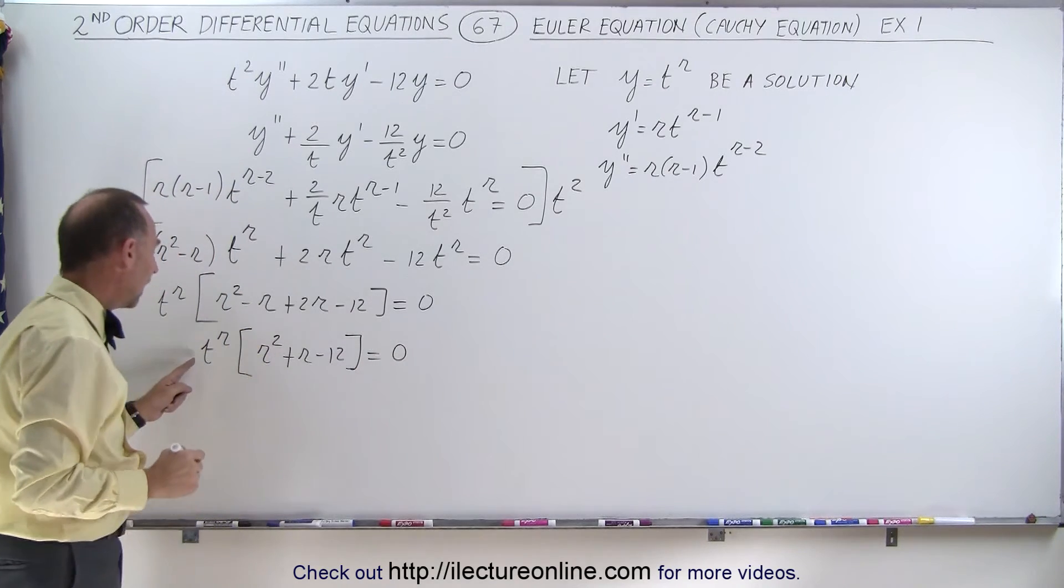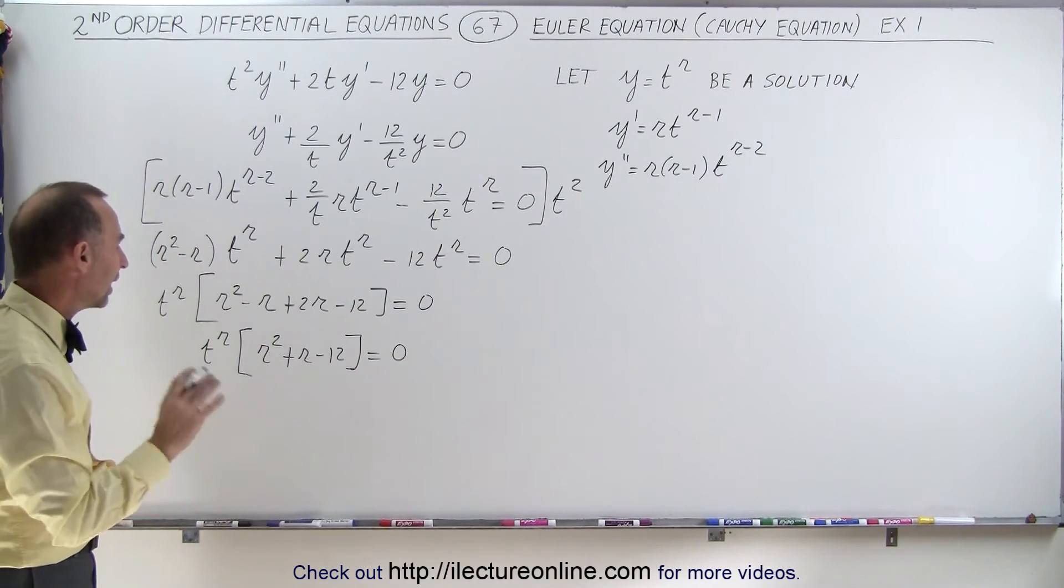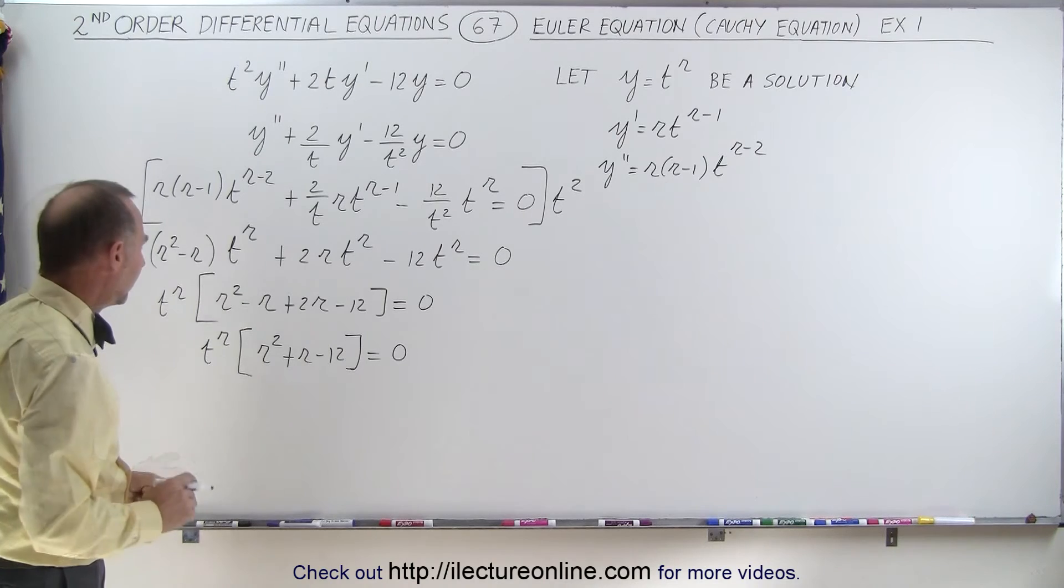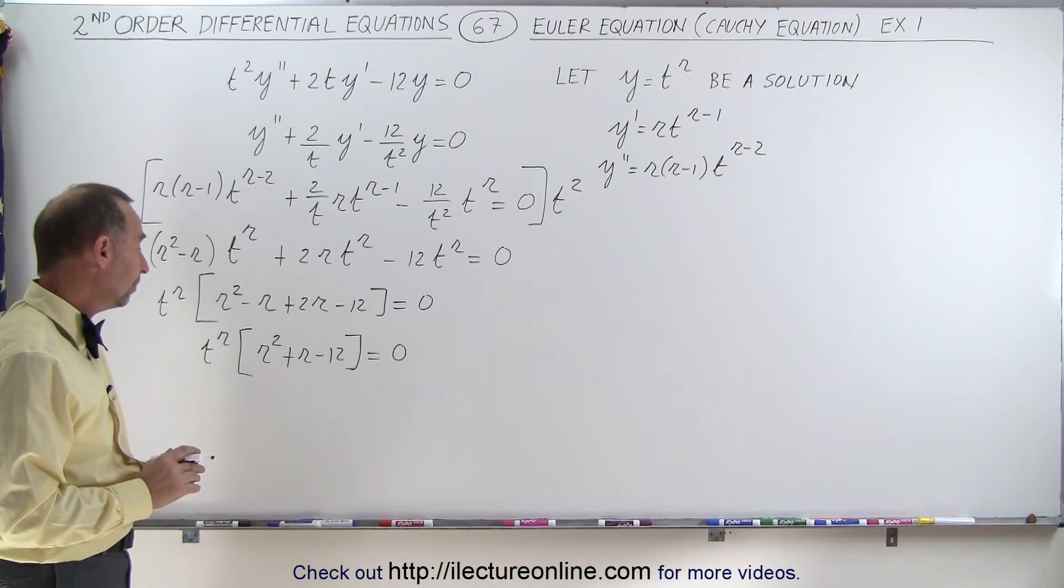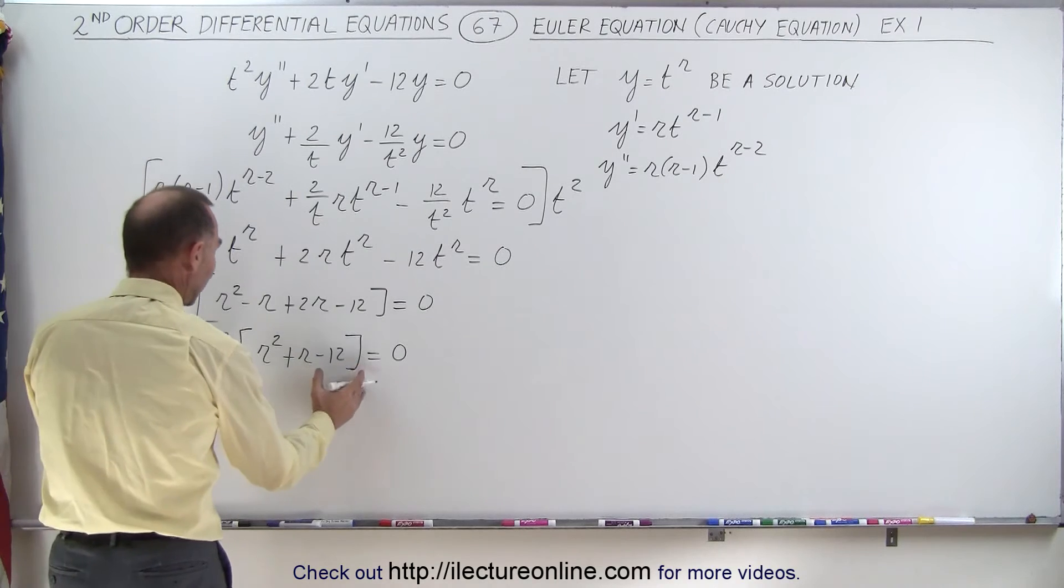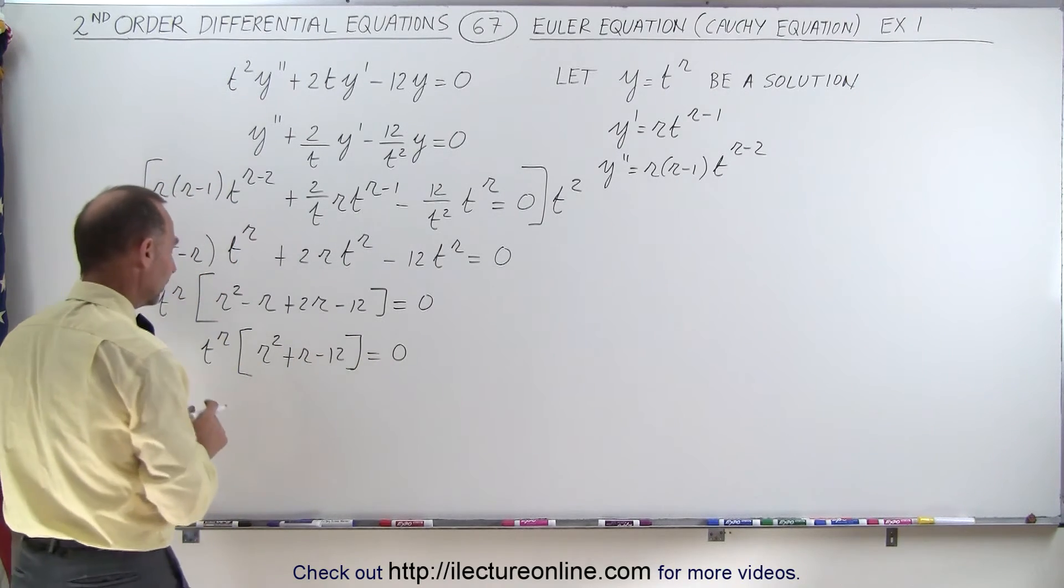And we're assuming that t to the r will not equal zero. Next, we're going to solve this as a quadratic equation, because we know that for the left side equals zero, what's in the brackets here must equal zero.